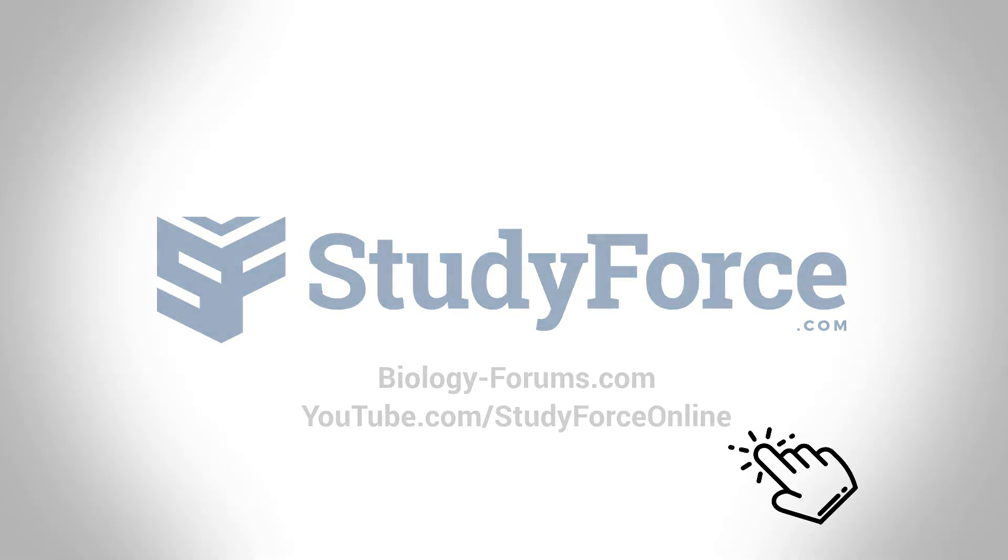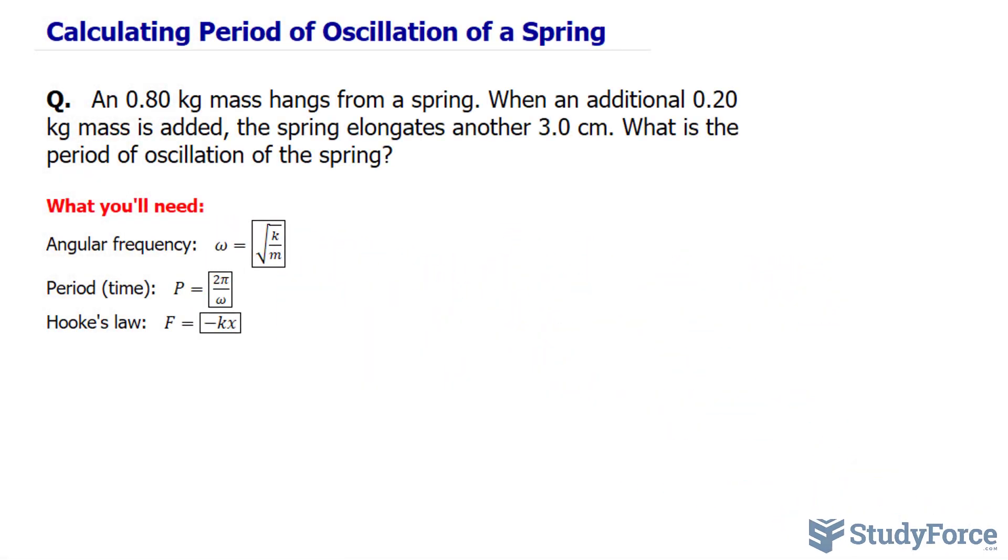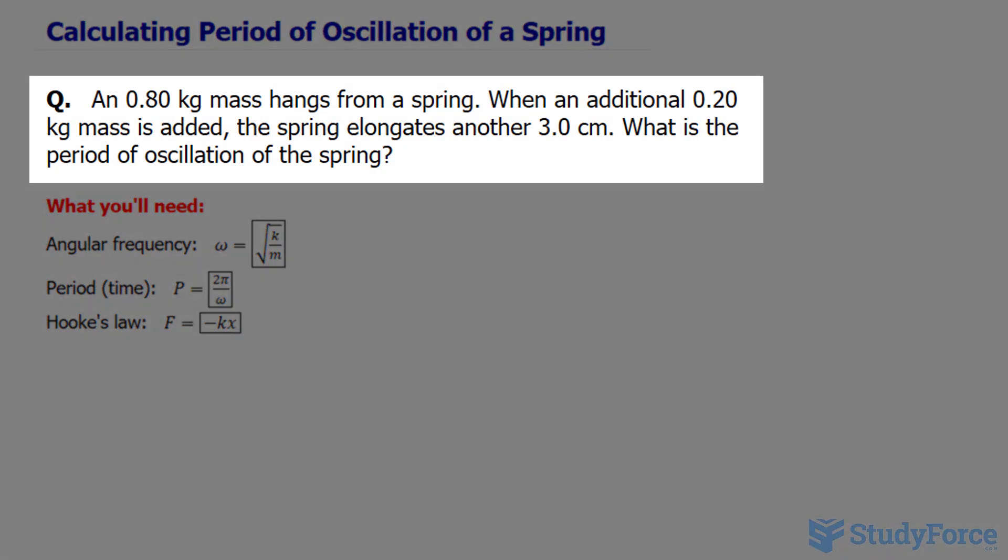In this lesson, I'll show you how to calculate the period of oscillation of a spring. The question reads: a 0.8 kilogram mass hangs from a spring. When an additional 0.2 kilogram mass is added, the spring elongates another 3.0 centimeters. What is the period of oscillation of the spring?